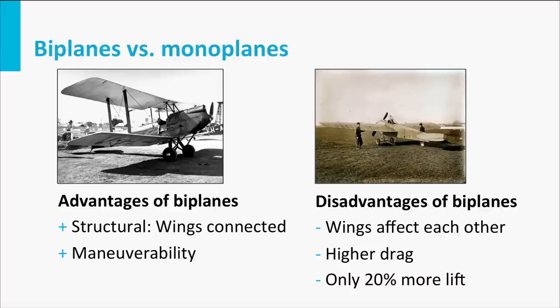Besides the structural advantage, a biplane had better manoeuvrability. But biplanes do not have only advantages; they also had some disadvantages. First, the airflow around the wings affects each other. Also, two wings result in higher drag during flight. And last but not least, increasing the wing area by an extra wing does not imply that the wing forces are doubled. The two wings of a biplane offer just 20% more lift than a monoplane. Therefore, in the end, monoplanes got the upper hand.